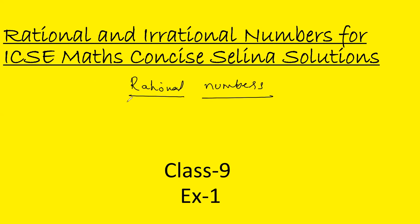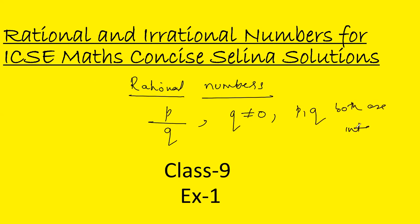Rational numbers are those numbers which are in the form of p by q. The second condition is that q should not be equal to 0, and the third condition is that both p and q are integers. So p and q can be negative or positive integers — it doesn't matter — but q cannot be 0, because if the denominator is 0, the number becomes undefined.